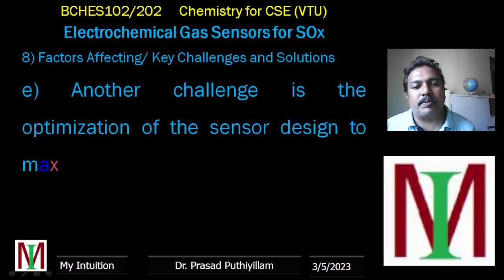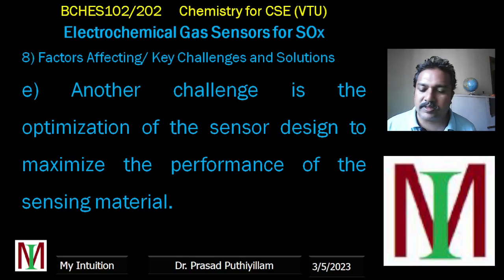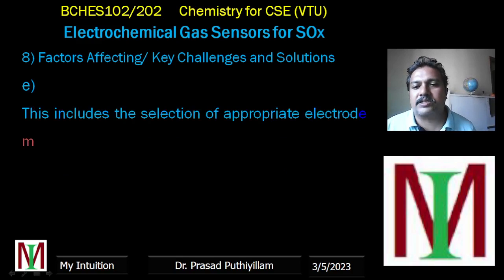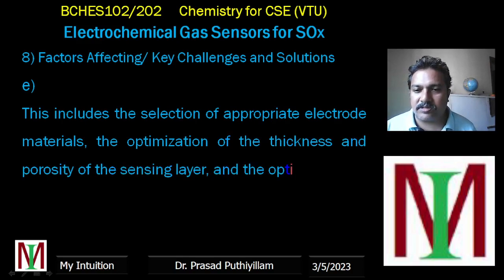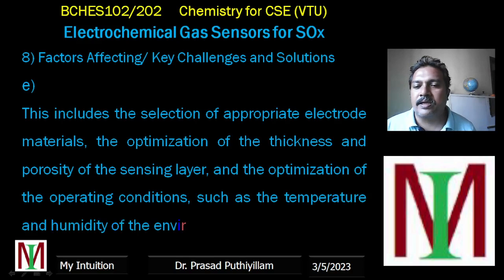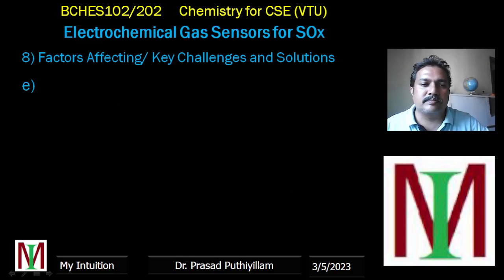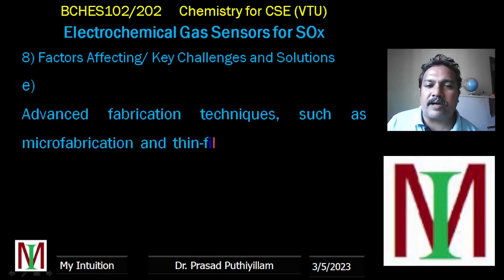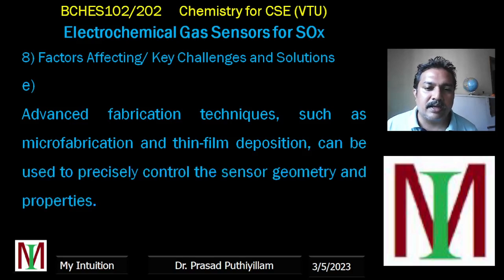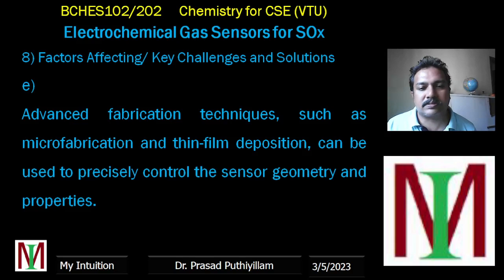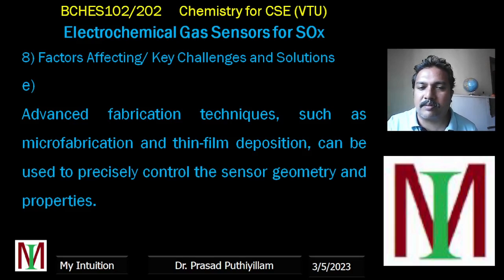Another challenge is the optimization of sensor design to maximize the performance of the sensing material. This includes selection of appropriate electrode materials, optimization of the thickness and porosity of the sensing layer, and optimization of operating conditions such as temperature and humidity. Advanced fabrication techniques such as microfabrication and thin-film deposition can be used to precisely control the sensor geometry and properties.